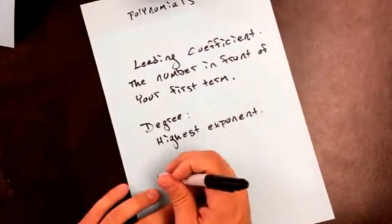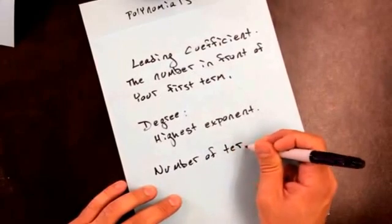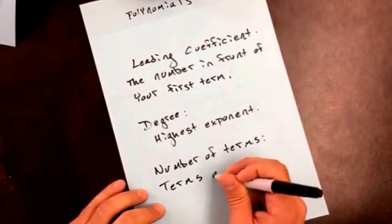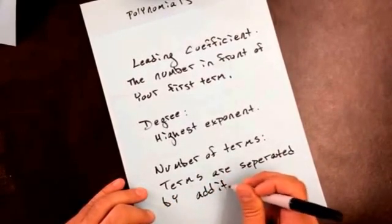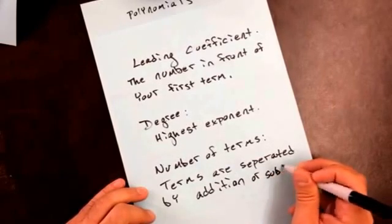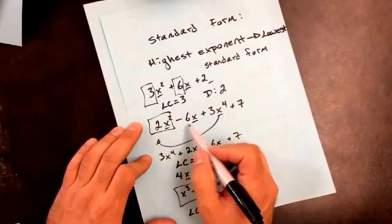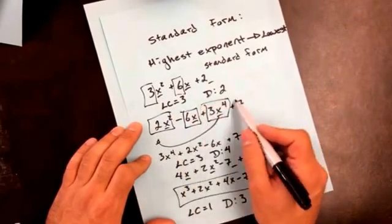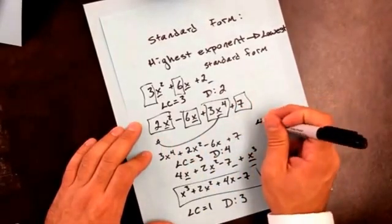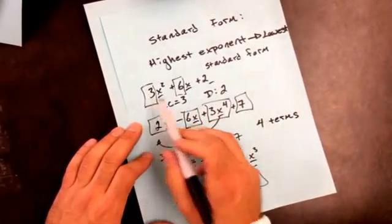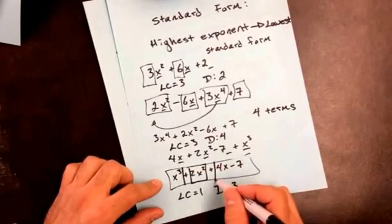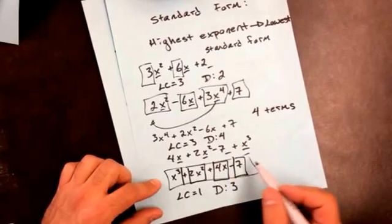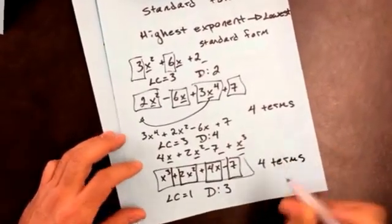The next thing we're going to look for is the number of terms. Terms are separated by addition or subtraction. So going back to this example: there's a minus sign here — that's one term; a plus — another term; a plus — another term; and a last term. So the number of terms here is 4. On this other one: here's one term, a plus gives another term, a minus gives another term, and here's the last term. So 1, 2, 3, 4 — four terms. Fairly simple.